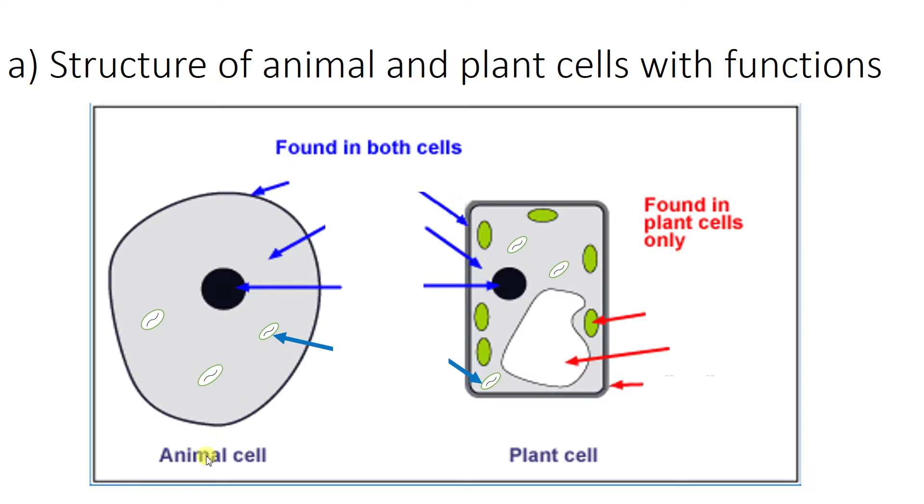So this over here on the left is an animal cell, and on the right we have a plant cell. Specifically this is called a palisade cell, which just means it's a leaf cell, but in terms of this specification this is going to be a plant cell to you.